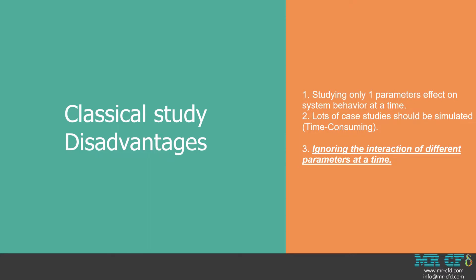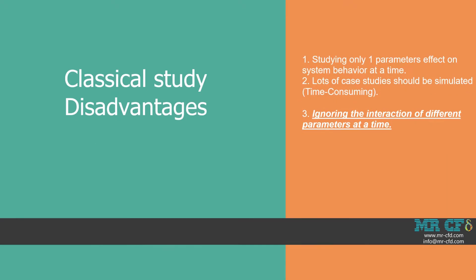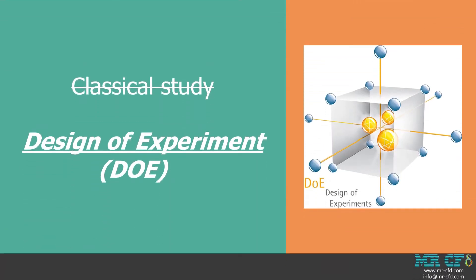This method requires numerous experiments and is very time-consuming. Besides, it is impossible to observe the interaction of different parameters and their combined effect on the outcome. To solve this problem, Design of Experiments or DOE method can help.